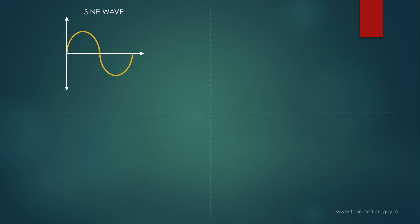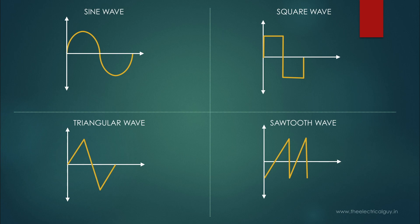In AC, sine wave is not the only waveform we can get. Waveforms can be different like square wave, triangular wave, or sawtooth wave. If you see, all these waveforms are changing the magnitude and direction both. All these waveforms represent AC supply.